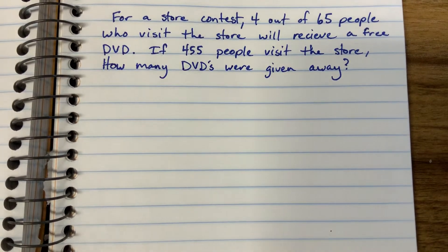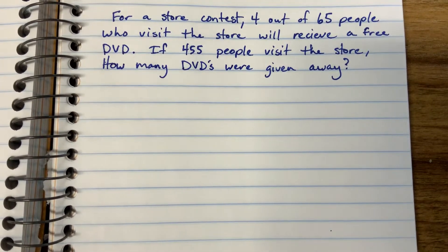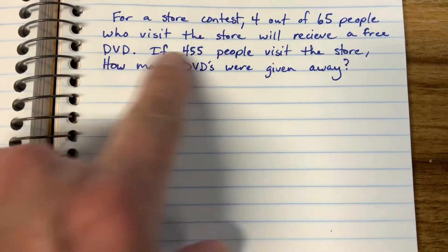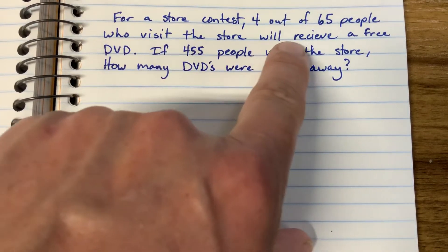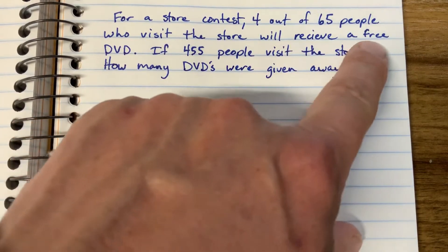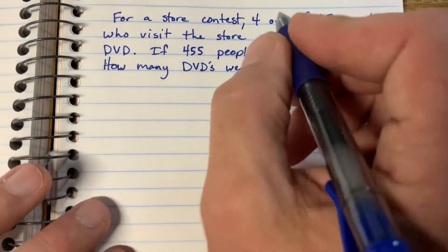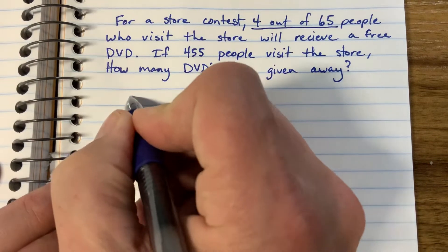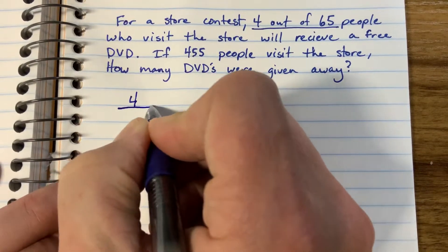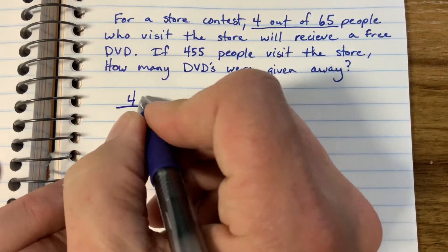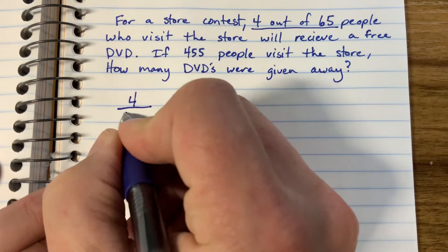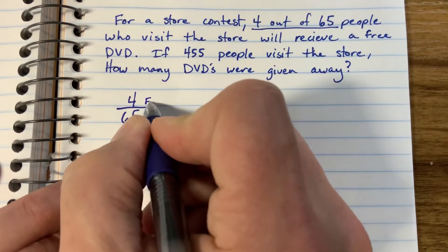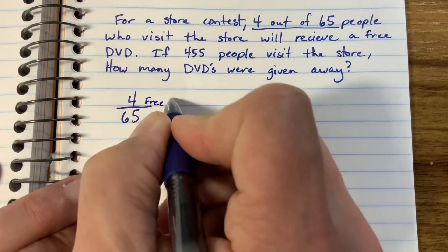So for our next problem, we have another word problem here, and it says: For a store contest, 4 out of 65 people who visit the store will receive a free DVD. That's a ratio — 4 people out of 65 people receive a free DVD, so these 4 get a free DVD.